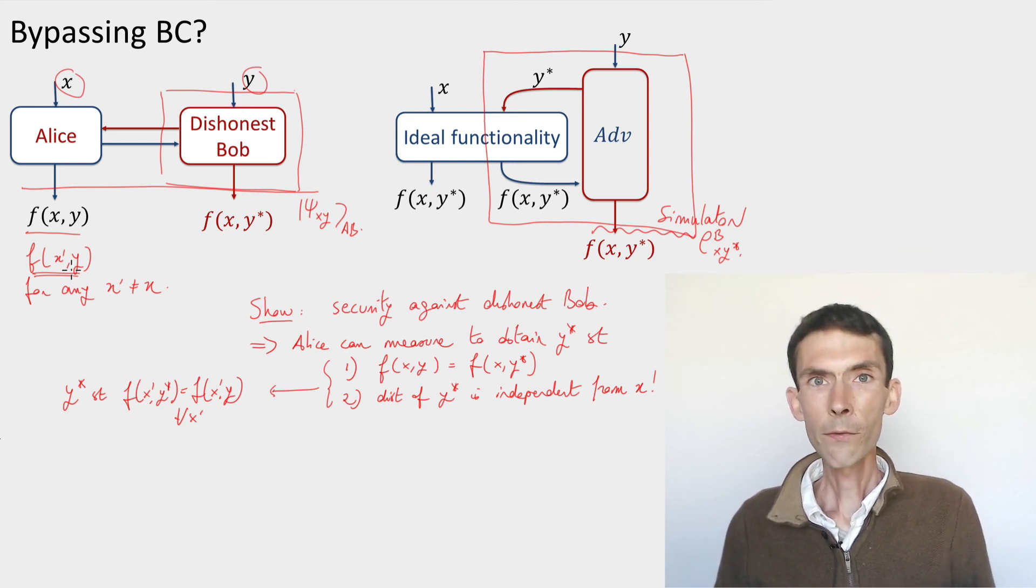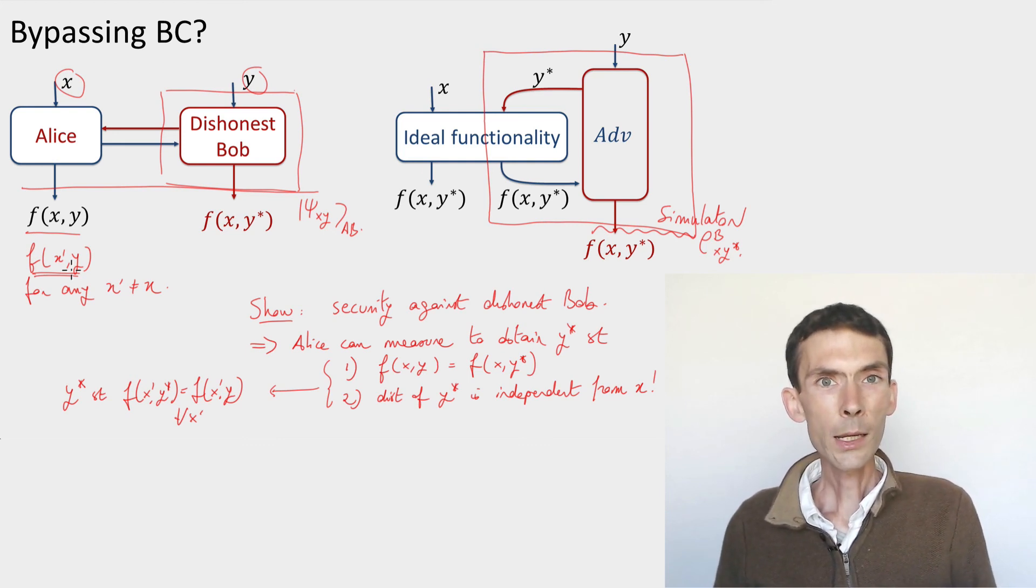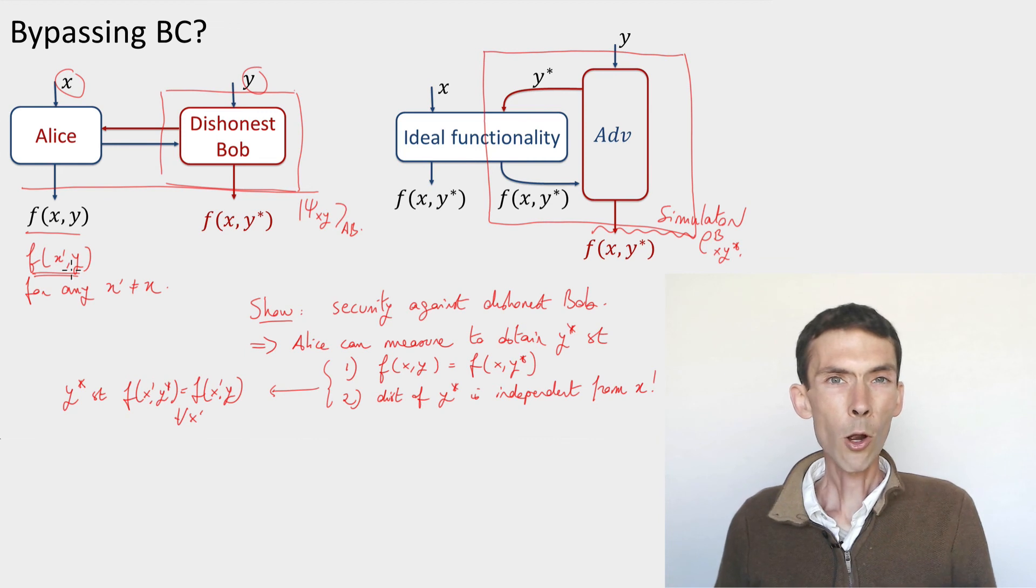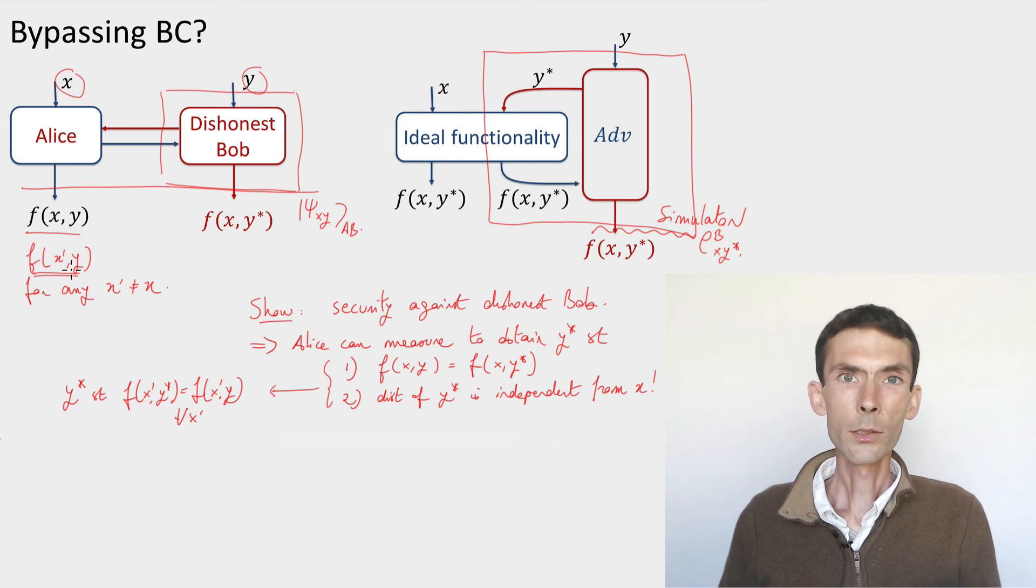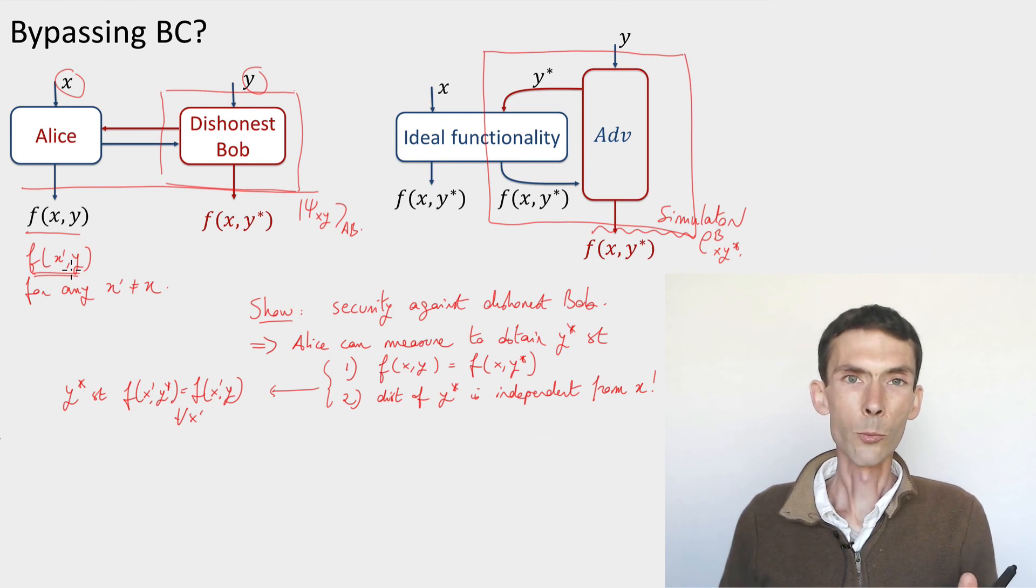But you can still ask the question if there wouldn't exist some functionalities oblivious transfer bit commitment maybe others that can be obtained constructed with somehow stronger guarantees using quantum protocols than classical protocols. And this turns out to be the case. In a couple videos later we're going to see such an example which is called coin tossing where even though you can't do it perfectly there is an advantage to quantum communication.